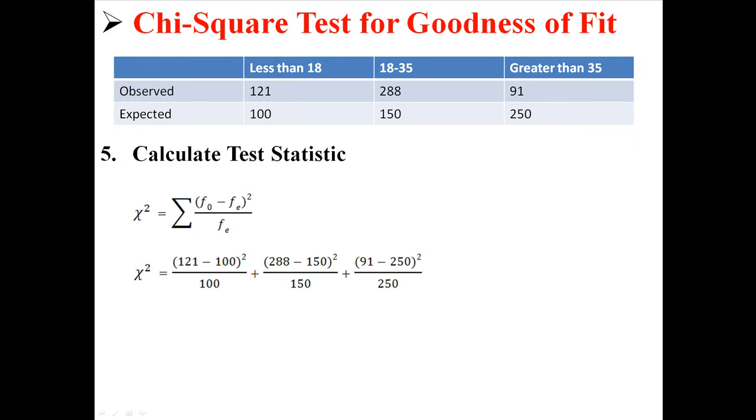So, it looks something like this. For less than 18, we observed 121, and we expected 100. So, it's 121 minus 100 squared, divided by 100. And then we add the other two observed minus expected fractions to get our total chi-square, which in this case is 232.494.